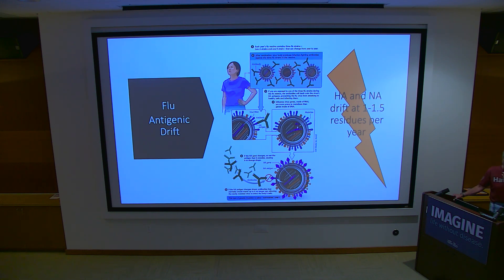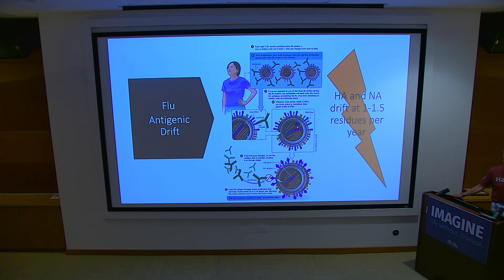If we get a new hemagglutinin subtype, like H5, or a new version of an old one like the new H1 in 2009, we get something called an antigenic shift and our immunity is much reduced. On the other hand, drift is a constant — and drift is occurring actually remarkably slowly. Flu is famous for drift.